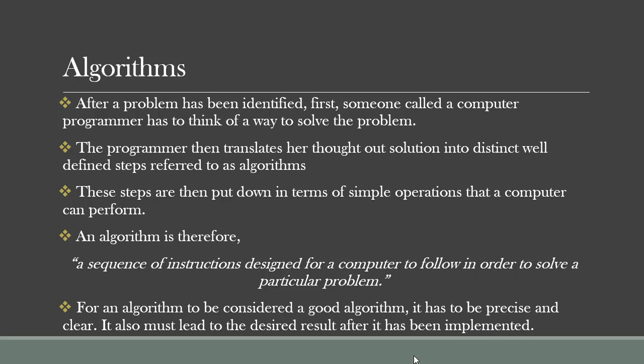The programmer also translates this solution into distinct, well-defined steps. Now these distinct, well-defined steps is what we refer to as algorithms. And these steps are put down in terms of simple operations that a computer can perform. Like I said, a computer follows specific instructions, exact instructions. And these instructions are what it follows to do what it does. So if you want to get a specific definition of an algorithm, an algorithm is a sequence of instructions designed for a computer to follow in order to solve a particular problem.